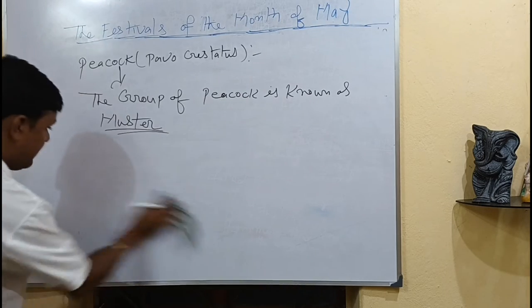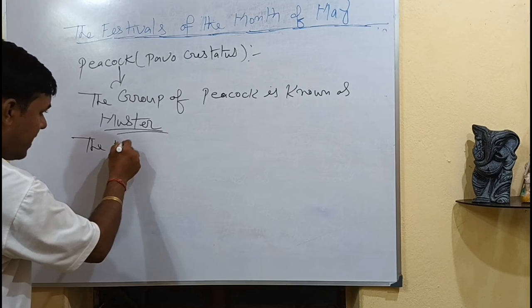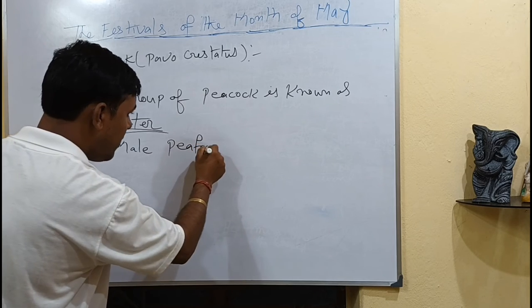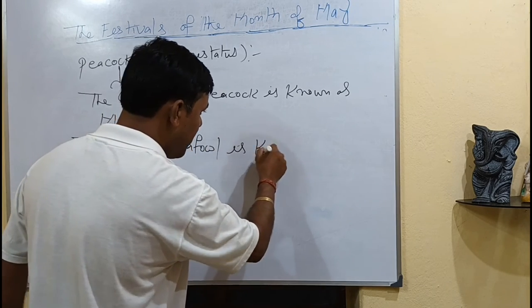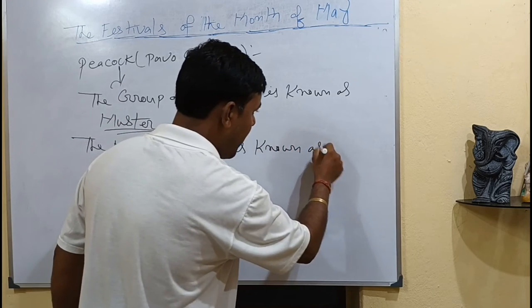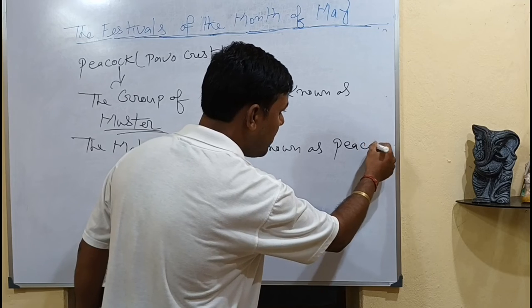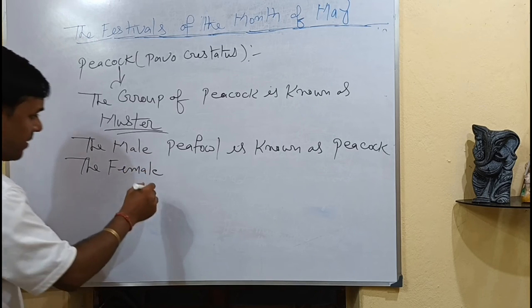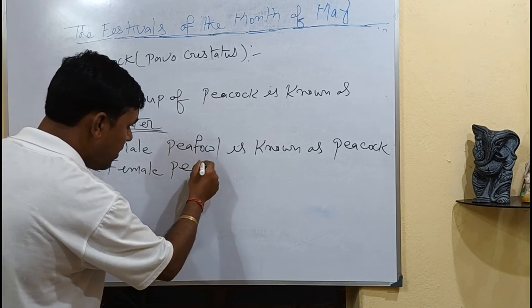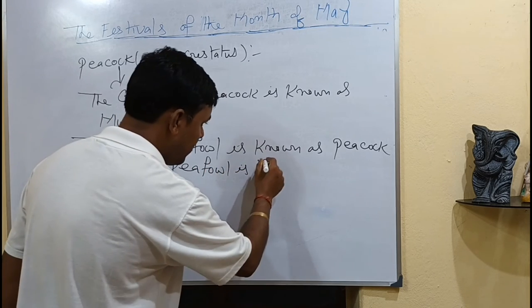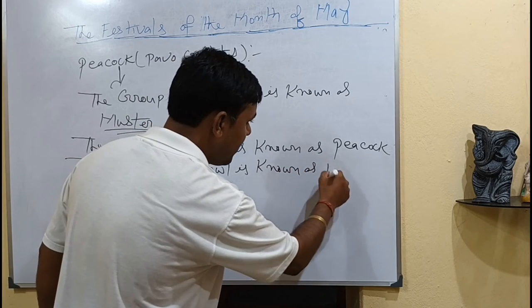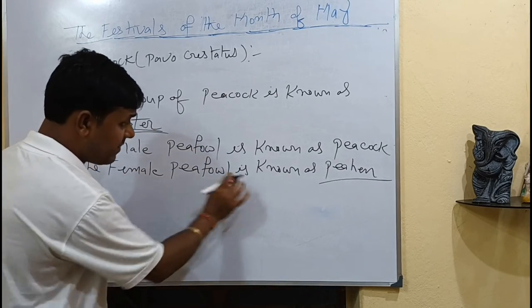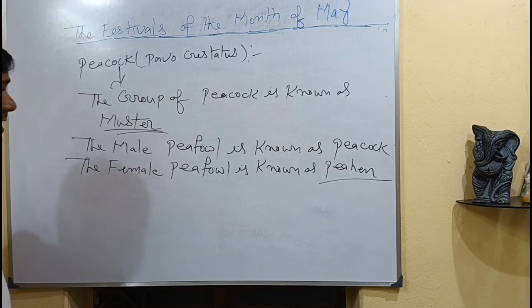The male peafowl is known as a peacock, and the female peafowl is known as a peahen. These are facts related to the peacock.